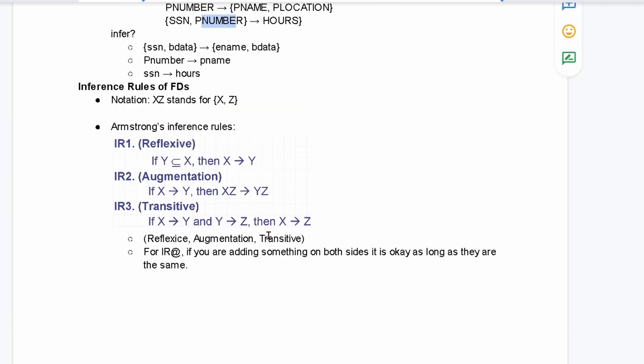So, looking at all of these, if our Y is a subset and equal to our X, then X is going to be going to Y. So Y is our dependent here. Well, we also have augmentation. If X goes to Y, then we can add something on both sides if we wanted to. Adding something on both sides, we're going to have X, Z going to our Y, Z.